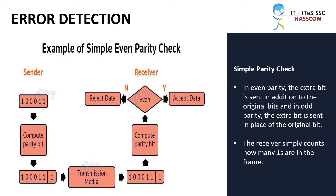Simple Parity Check: In even parity, an extra bit is sent in addition to the original bits, and in odd parity, the extra bit is sent in place of the original bit. The receiver simply counts how many ones are in the frame.